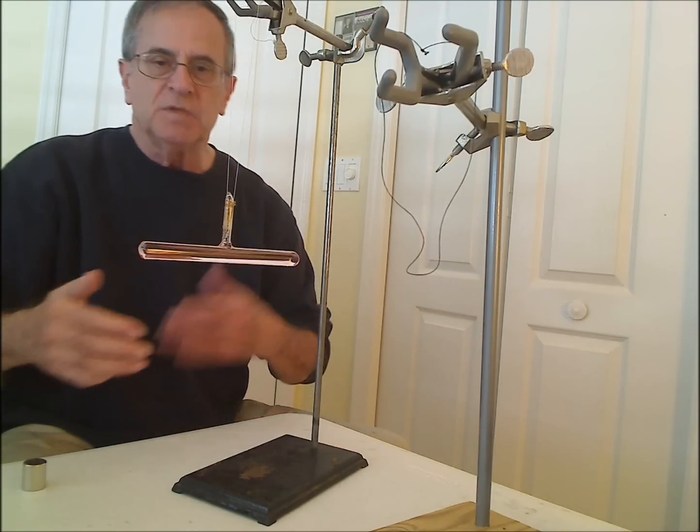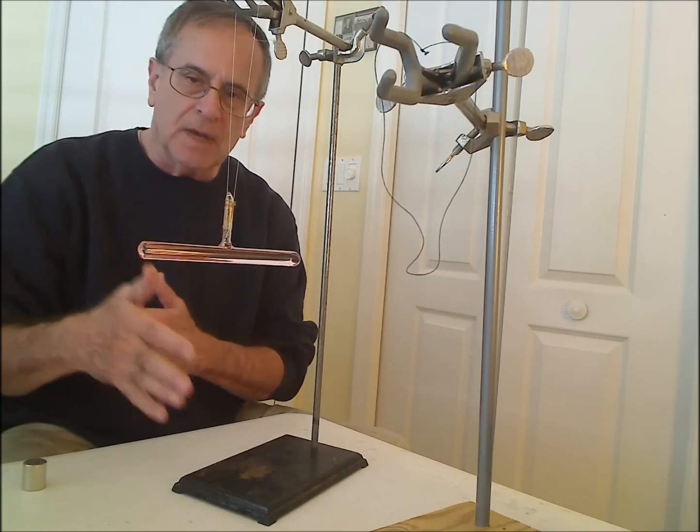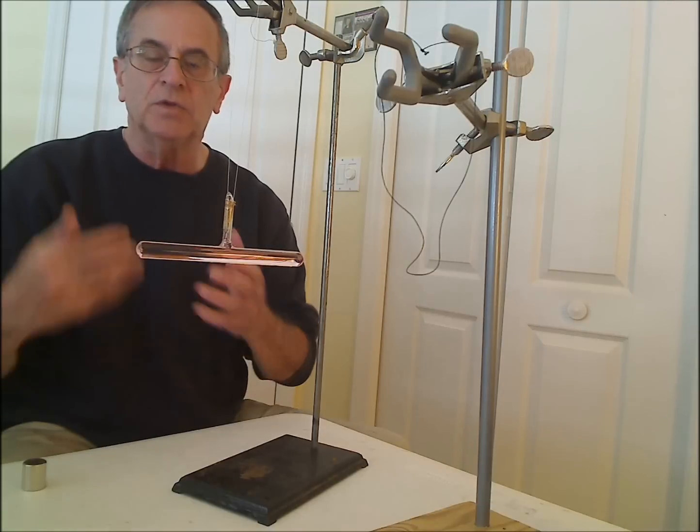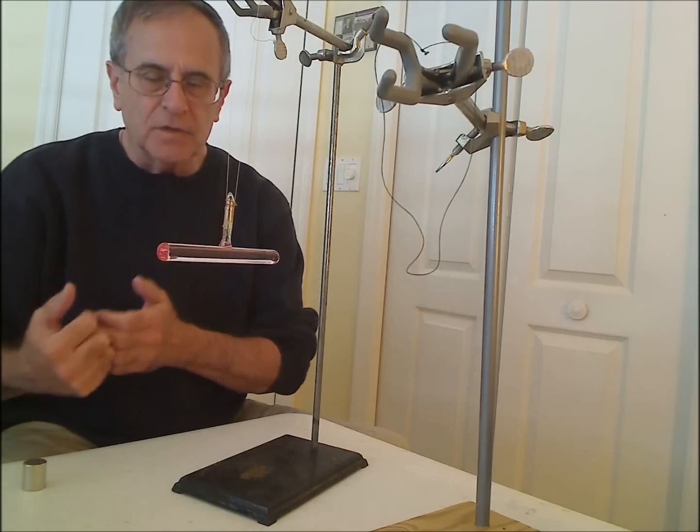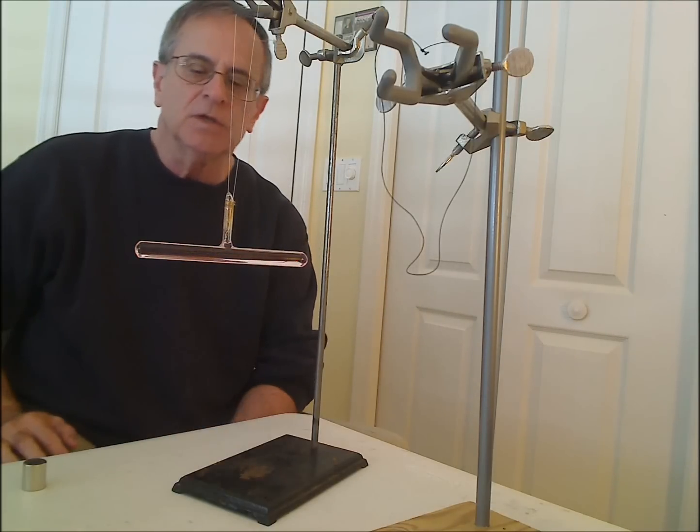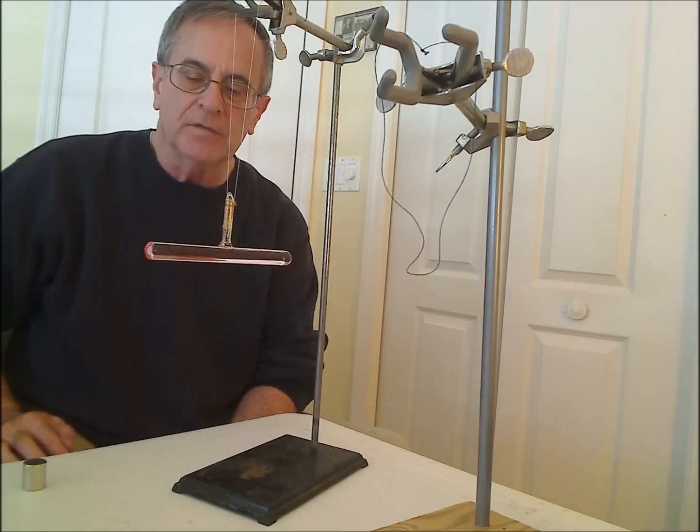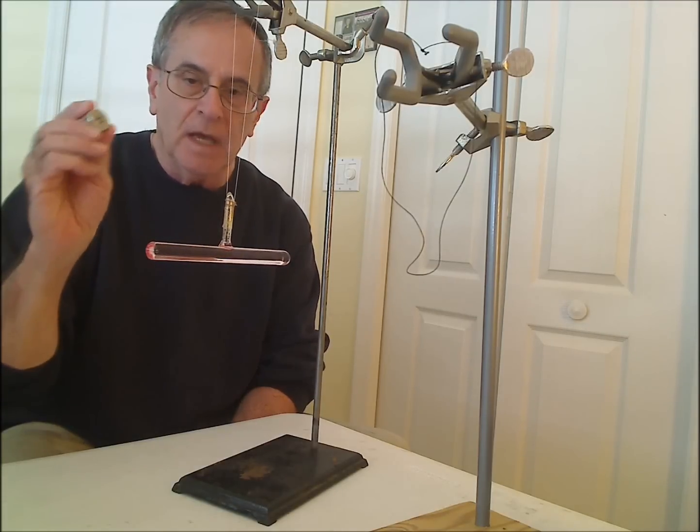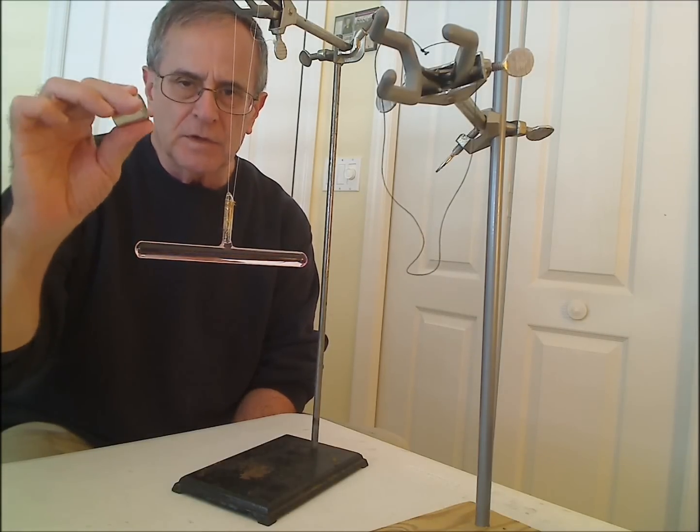Remember, the spins pointing in the direction of the field are attracted, those pointing in the opposite direction are repelled. But there's more pointing in the direction of the field than in the opposite direction. So you get a weak attraction to a magnetic field. But it's something that you can actually observe using a fairly strong magnet.